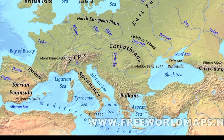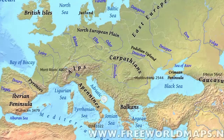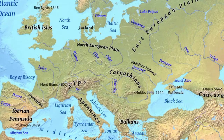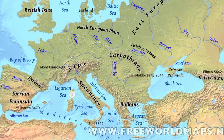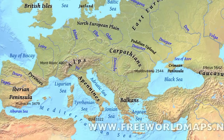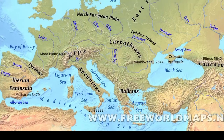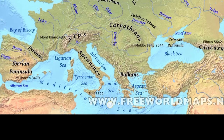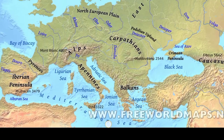This is the Apennines and the Adriatic Sea. This is the Ligurian Sea. This is the Tyrrhenian Sea — and this whole body of water is called the Mediterranean Sea.